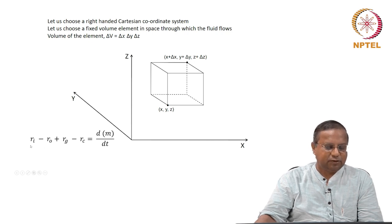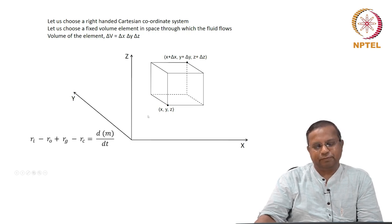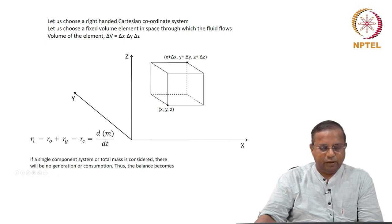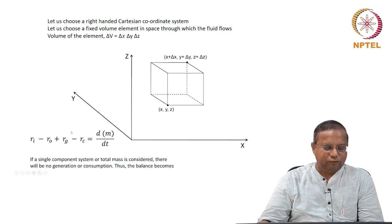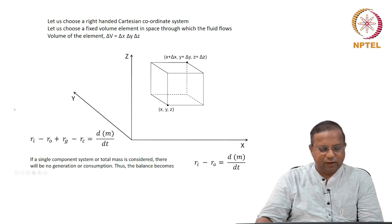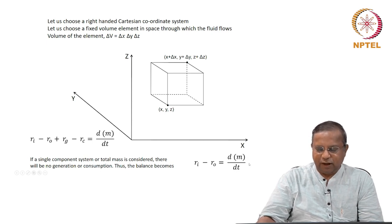This is the material balance expression: input rate minus output rate plus the generation rate minus the consumption rate equals the accumulation rate of that species in the system, d/dt of n. If a single component system or the total mass is considered, there will be no generation or consumption. Therefore, there is no rg and no rc, and the balance becomes: input rate minus output rate equals d/dt of m of that single component in the system.